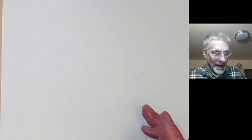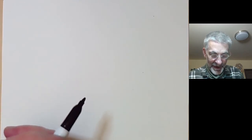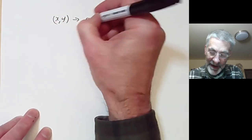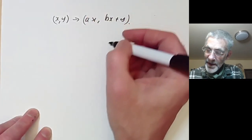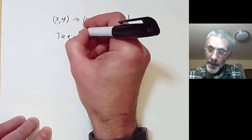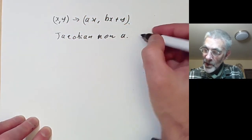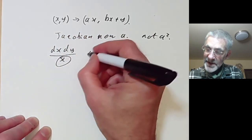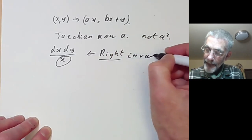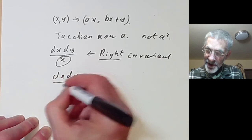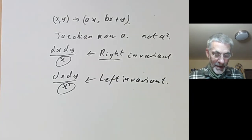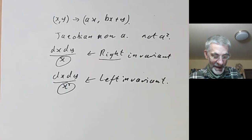What about right invariant measures? If we multiply by (a,b) on the right, this takes (x,y) to (ax, bx+y), and the Jacobian is now just a, not a². So the right invariant measure is dx dy / x. You can see it's definitely different from the left invariant measure which has x² in the denominator. So you have to be careful about distinguishing between left invariant and right invariant measures in general.